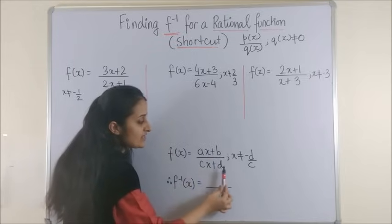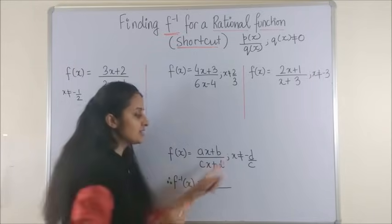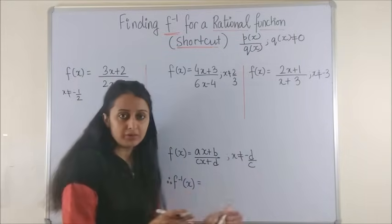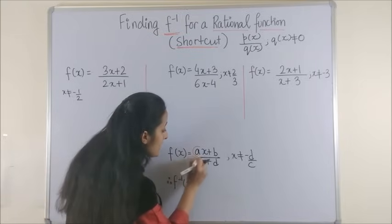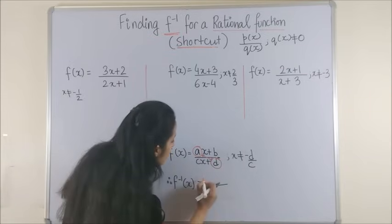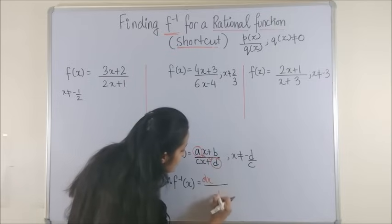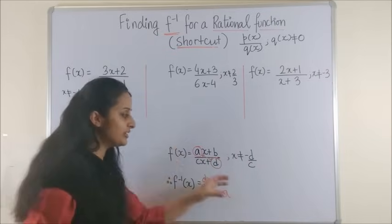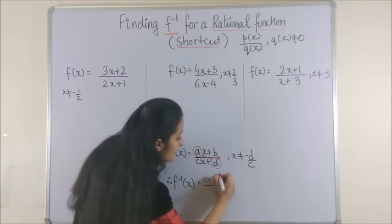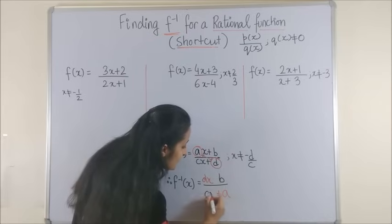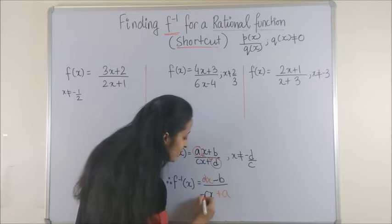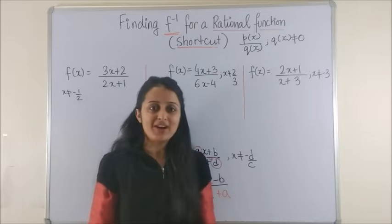What we are exploring in this video is the rational function of the form (ax plus b) over (cx plus d), where x is not equal to minus d over c. The moment you come across this form, all you do is exchange the a and d values — so here you get dx and here you get plus a. For the remaining b and c, you write the coefficients as they were but change their signs, so this becomes minus b and minus cx. And that is pretty much your answer.